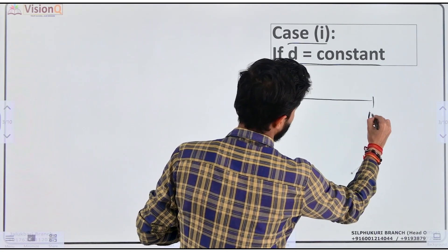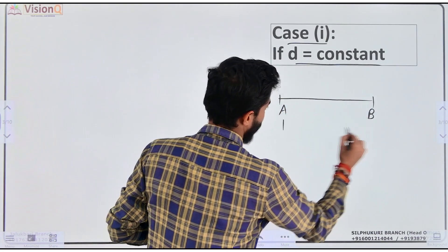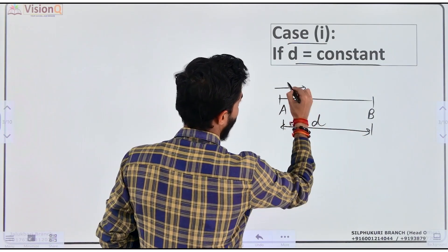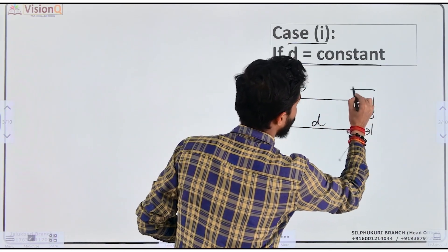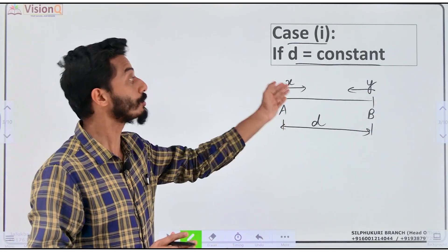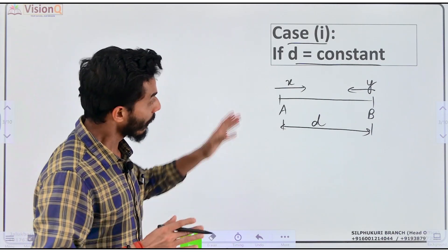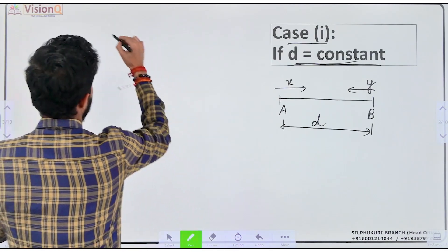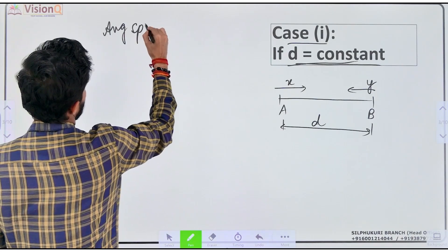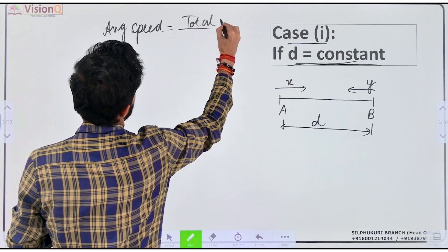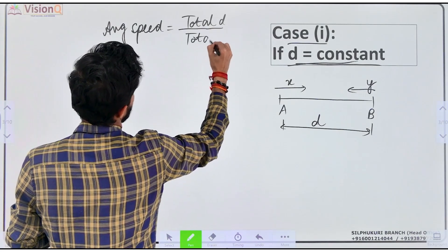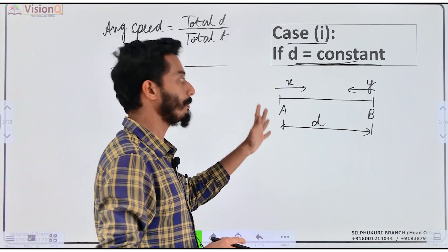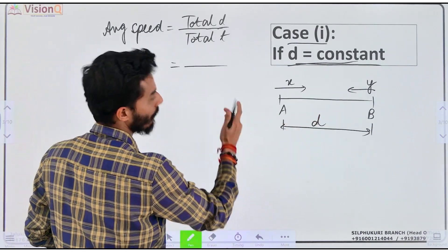Consider two points A and B. The distance between A and B is D kilometers. A goes from A to B at X kilometers per hour speed, and returns from B to A at Y kilometers per hour speed. Distance is constant. So what is average speed? Total distance by total time. Total distance is distance from A to B plus distance from B to A, which is D plus D = 2D.